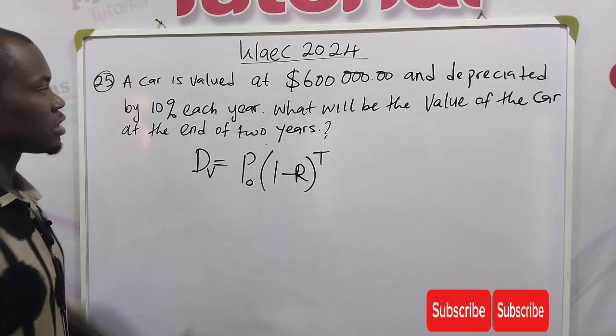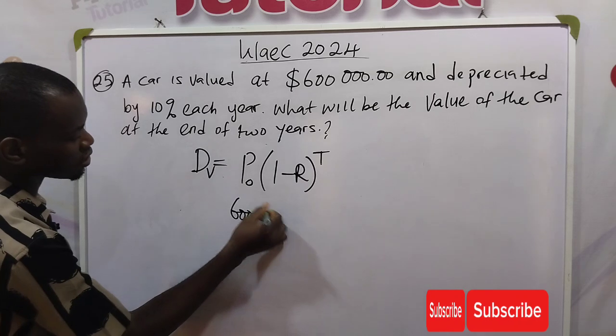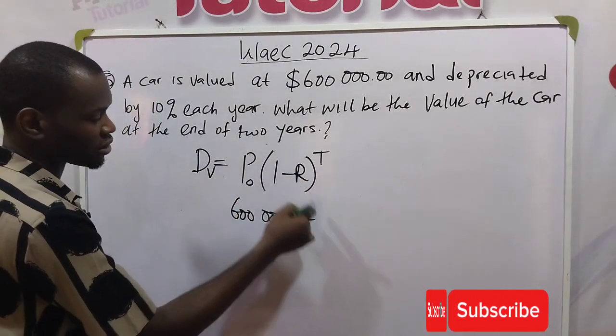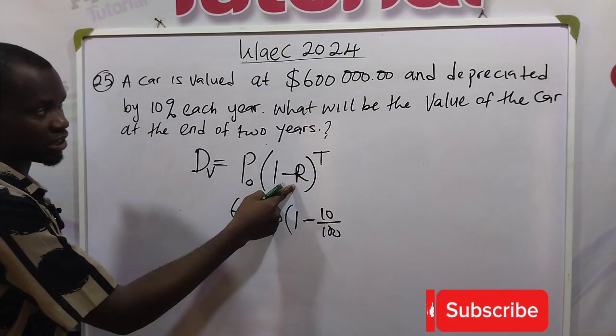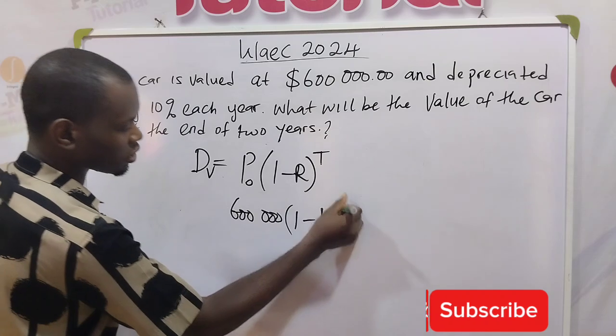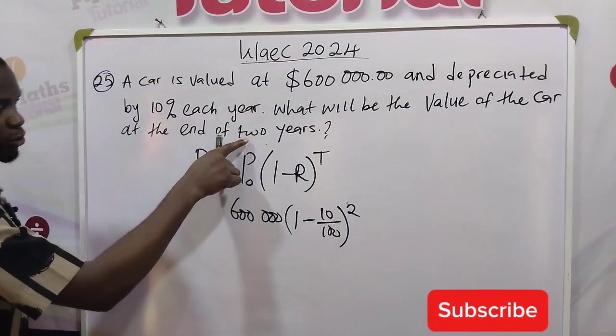From the question, our initial value is six hundred thousand into one minus the rate. The rate is 10 over 100 in percentage, so this is 10 over 100 raised to the power of 2 because we are calculating for two years.